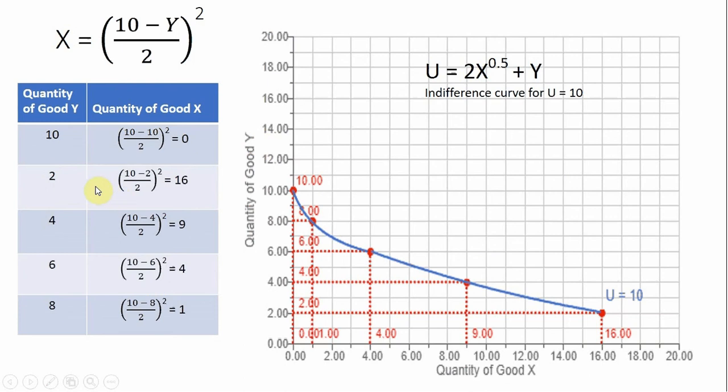And then I plug in 2. So plugging in 2, 10 minus 2 is 8, divided by 2 is 4, squaring that is 16. So when good y is 2 and good x is 16, utility is also 10. And we could plug these numbers back in here, putting in 16 for x and 2 in for y, and it better lead to utility of 10 if we did this right.